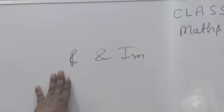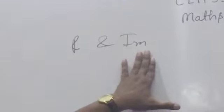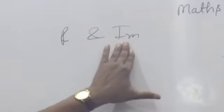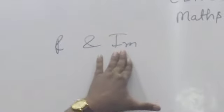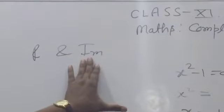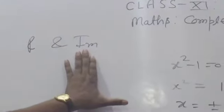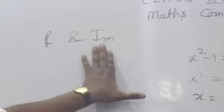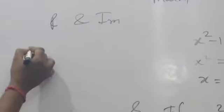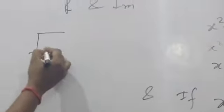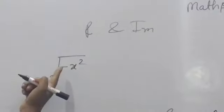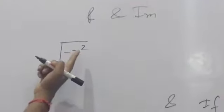R is for real and Im is for imaginary number. What do you mean by imaginary number? In class 10th, we have already done about imaginary numbers — it means the square root of a negative number. For example, suppose √(-x²). This is the square root of a negative number.